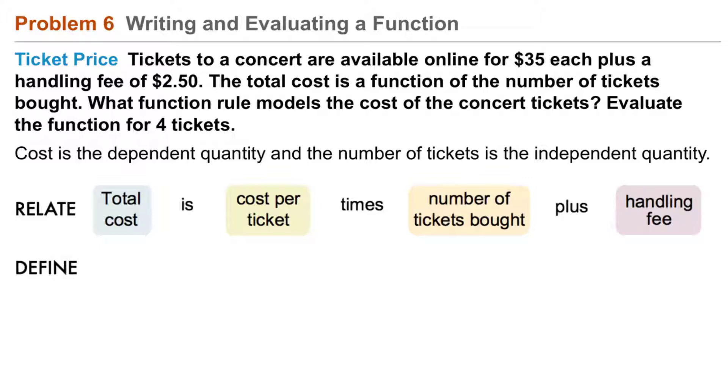We need a variable. We'll let t be the number of tickets bought. That makes sense. And we can let C(t), our function, capital C, represent the total cost.